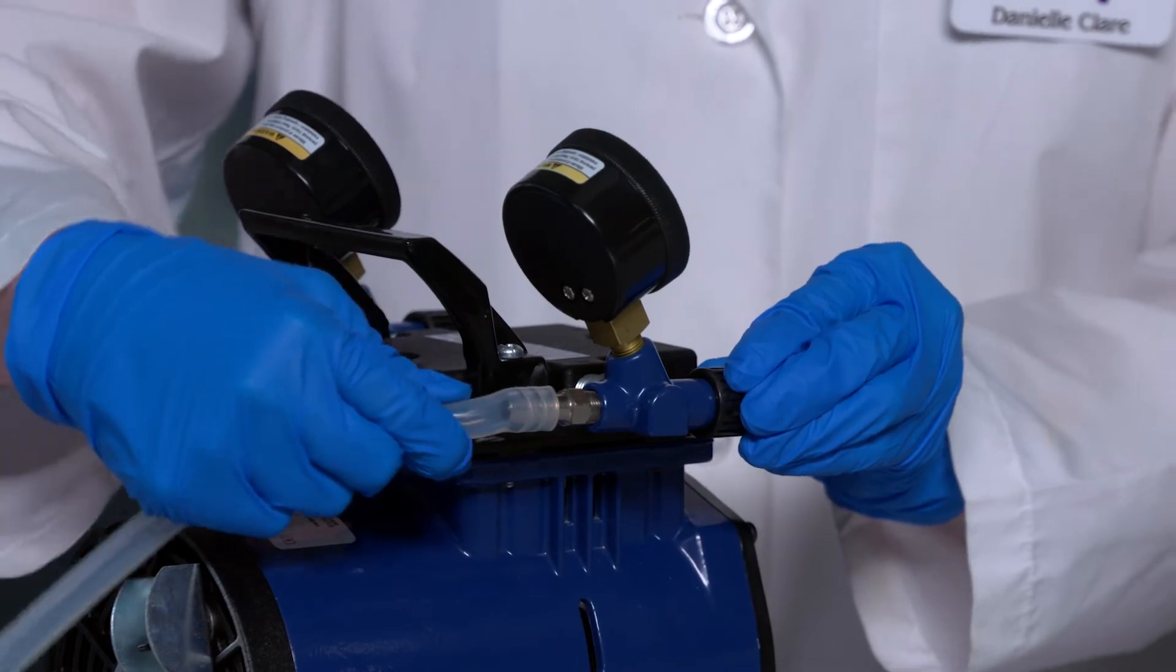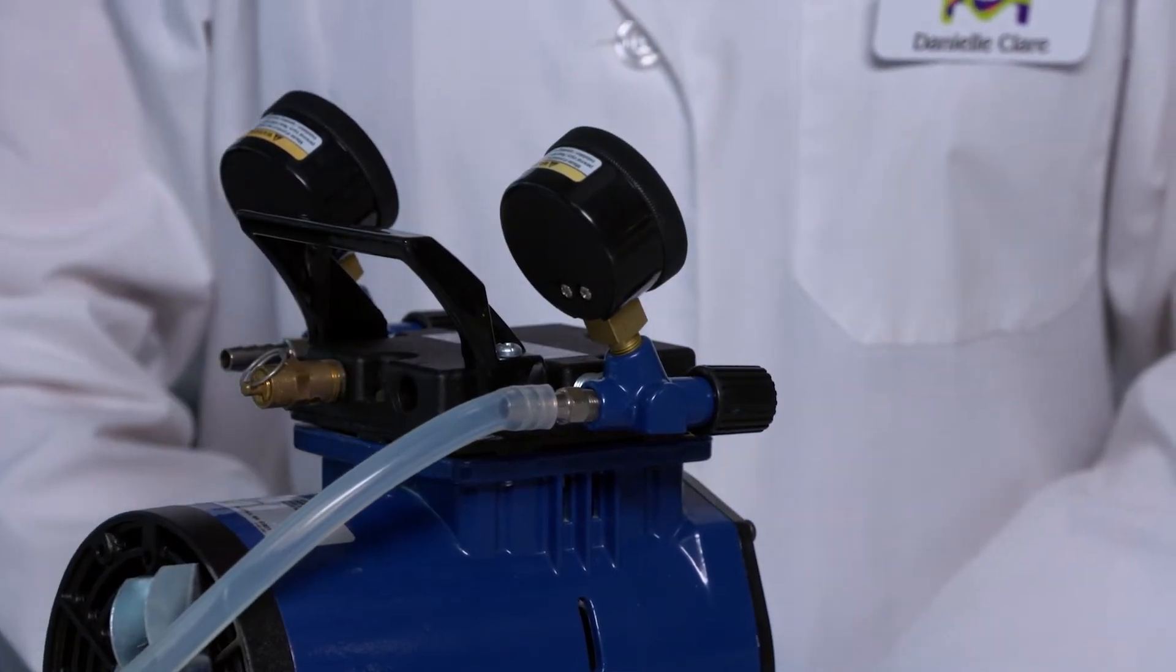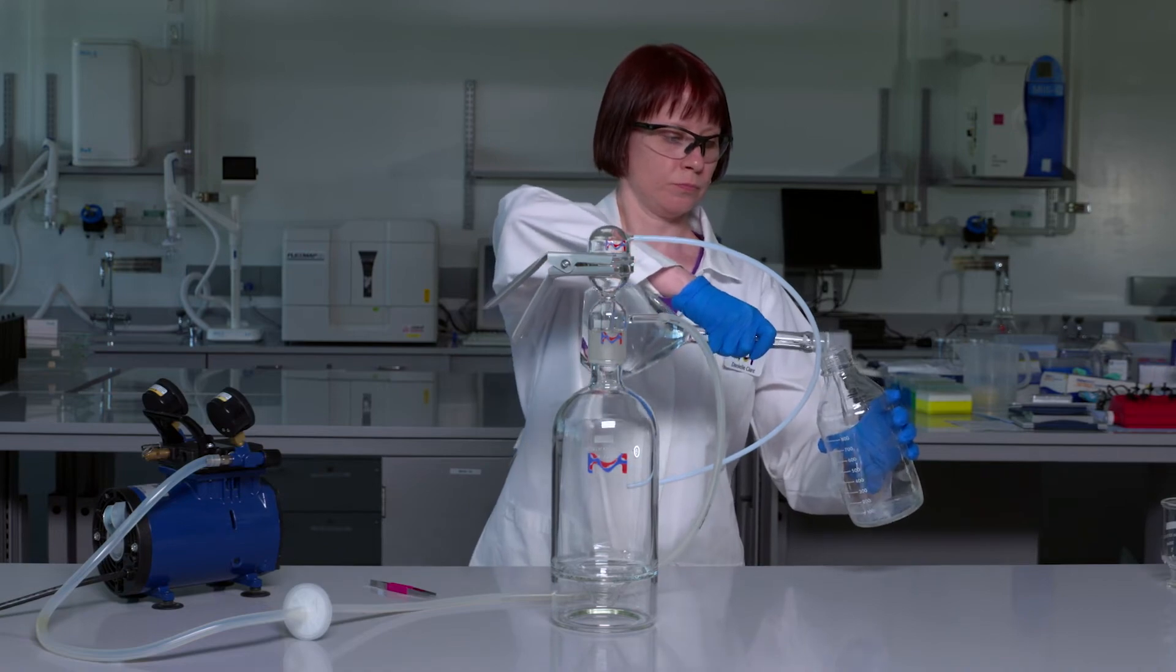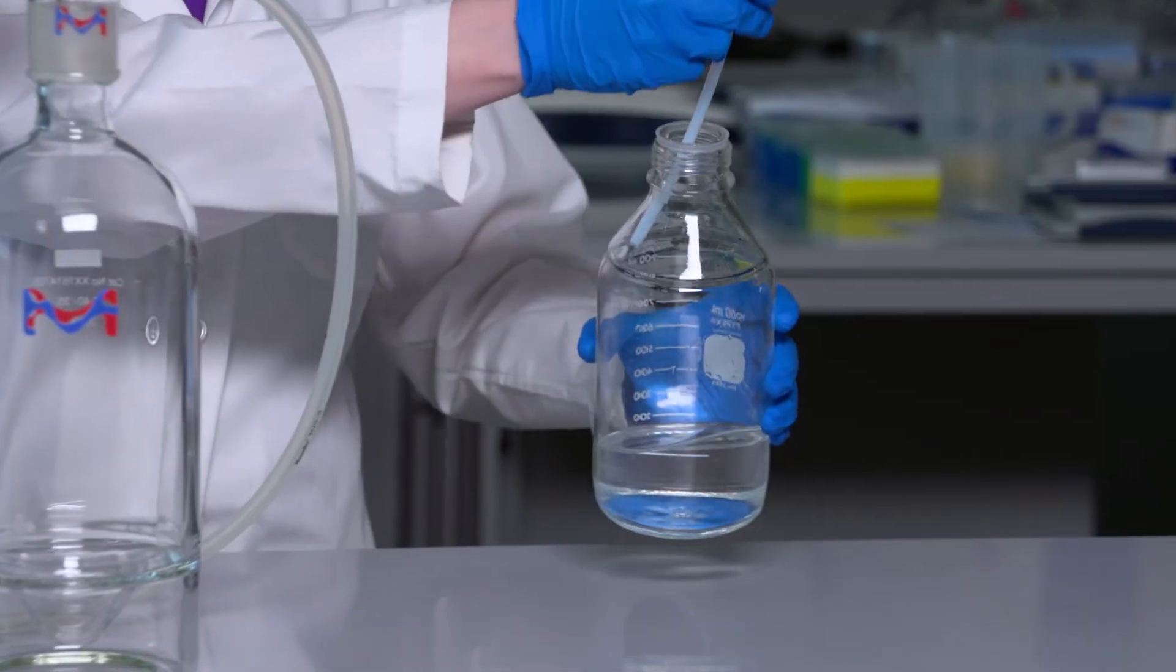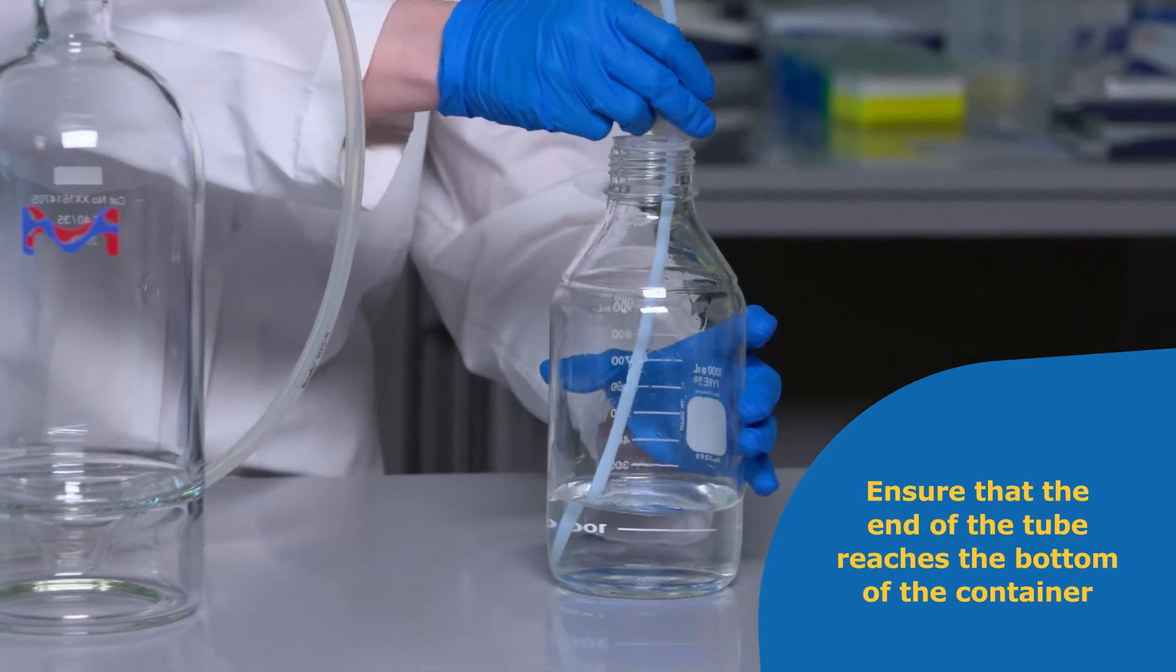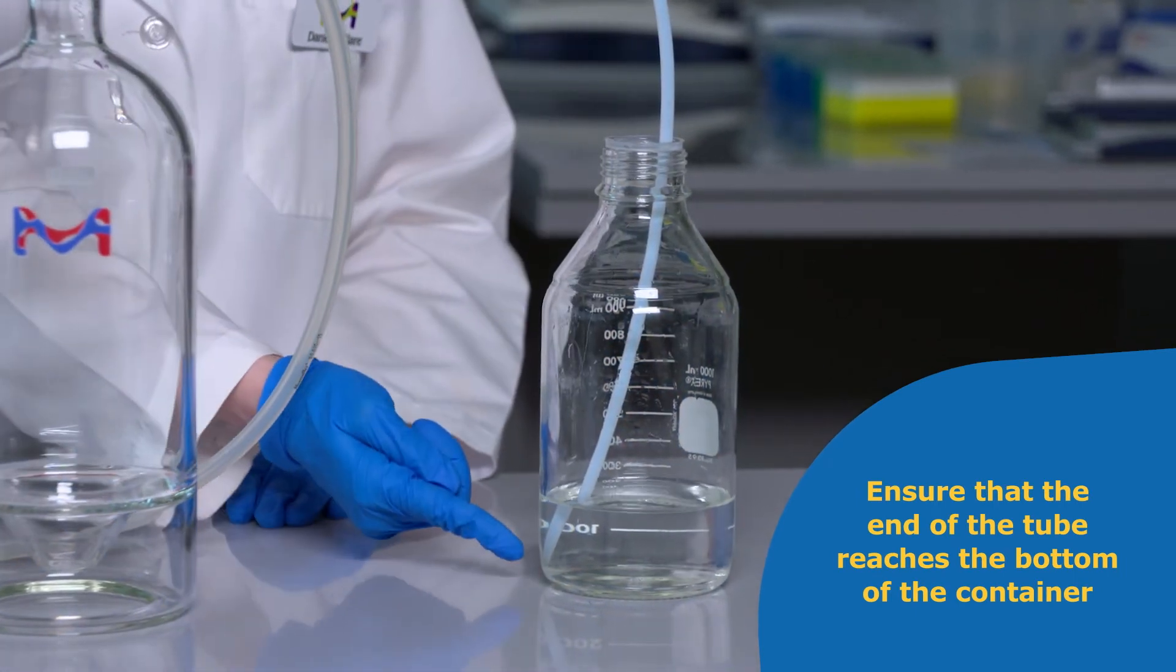Connect the free end of the vacuum tubing to the vacuum source. Pour the buffer or solvent to be filtered into a suitable lab-grade container. Place the end of the PTFE tubing into the solution to be filtered, ensuring that the end of the tube reaches the bottom of the container.